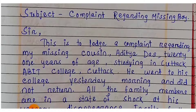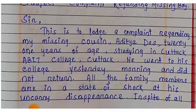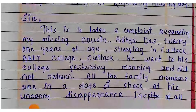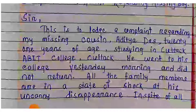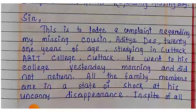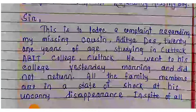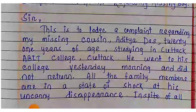Then write 'Sir,' with a comma. This is to lodge a complaint regarding my missing cousin. Here you have to write the missing person's age. He is studying in ABIT College, Cuttack. Here you have to mention what he or she is studying or working — anything you have to mention. In this complaint letter, the boy is only 21 years old and is a student studying in ABIT College, Cuttack.